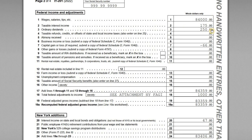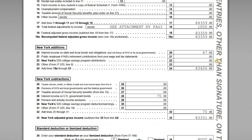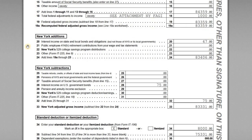Page two is where we get into the numbers. The federal income and adjustments section matches exactly what Adam has on his 1040 — wages, taxable interest income, ordinary dividends, and the $1,000 HSA adjustment. His recomputed federal AGI on line 19a is the same as his 1040 AGI. This figure could differ if there were any decoupling modifications on Form IT-55A, but Adam has none.